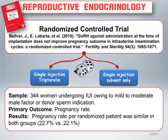A standard part of the planning of virtually any randomized controlled trial is the calculation of needed sample size to determine a statistically significant effect for the primary outcome of interest. It is also generally required that this a priori calculation be reported in the primary manuscript reporting the results of the randomized trial.